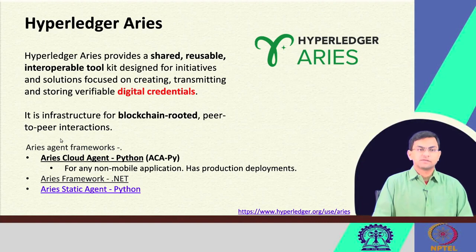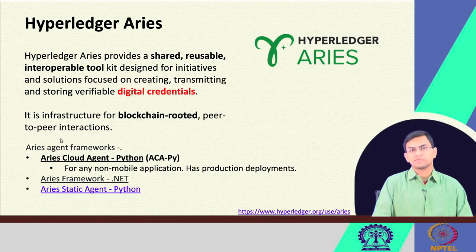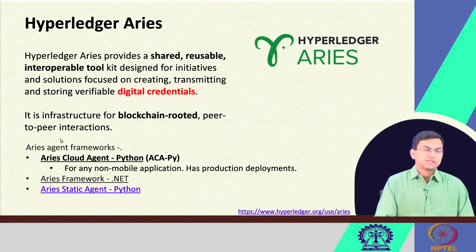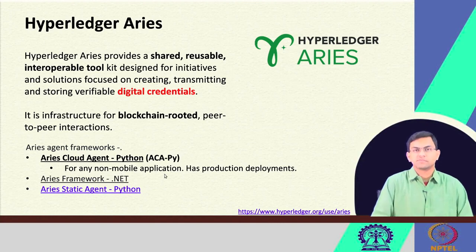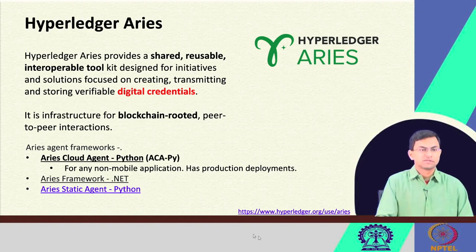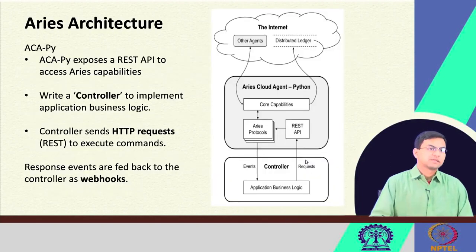The Aries framework provides Aries agents. These Aries agents are instances of applications that can be used by a participant to interact with Hyperledger Indy as well as communicate with other participants who are Aries-enabled or running an Aries agent. The three most popular Aries agent implementations are: Aries Cloud Agent Python, or ACA-PY, which is the most popular and can be used for any non-mobile application and has some production deployment; the .NET framework for Aries; and the Aries static agent Python. You can go to the Aries repository to read more about these.